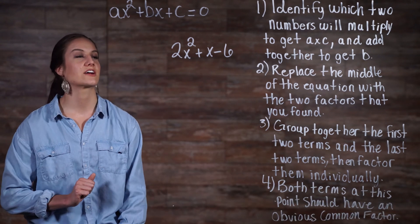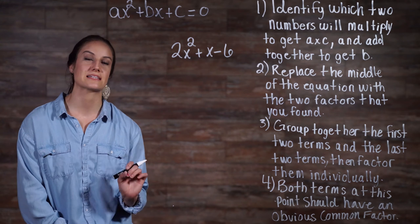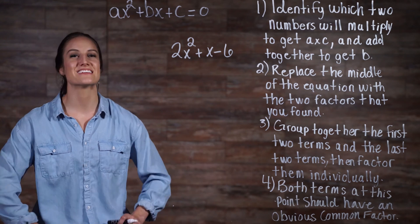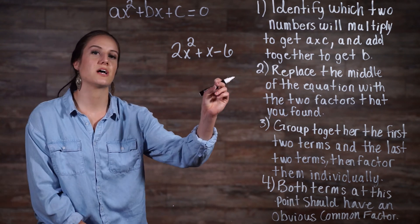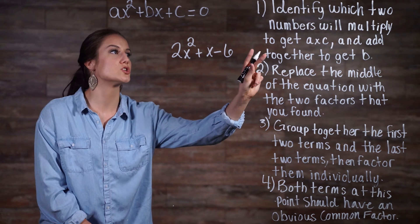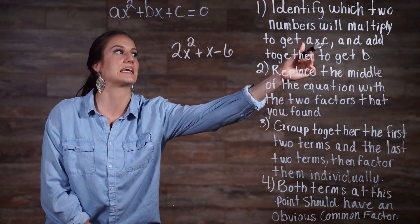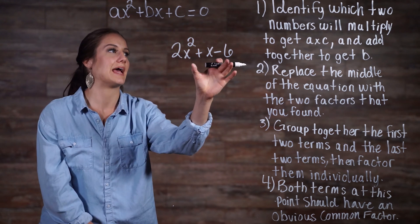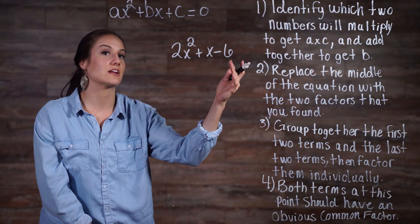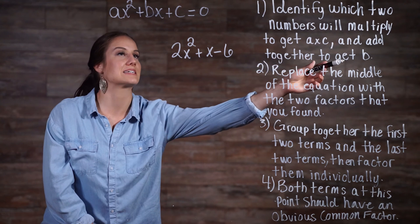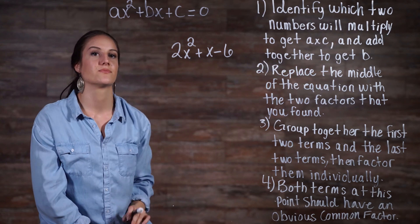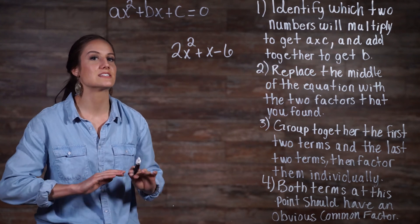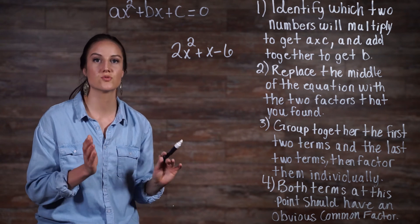Now let's look at how to factor our equation using these four steps. So our first step tells us that we need to find two terms that multiply together to get a times c. So remember a and c are right here, so here that's 2 and negative 6, so that's negative 12, but they also need to add together to get b. So let's go ahead and list all the possible factors of 12.